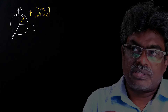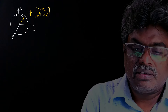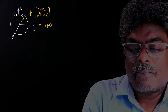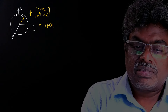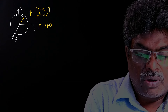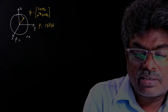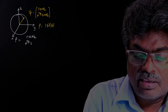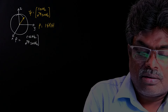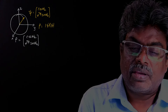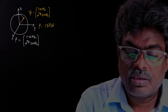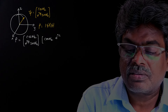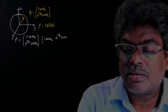For this state, first let me find the density operator. That is rho equal to the outer product |ψ⟩⟨ψ|. The ket vector is cos(θ/2) and e raised to iφ sin(θ/2). The bra vector is the row matrix: cos(θ/2), e raised to minus iφ, sin(θ/2).